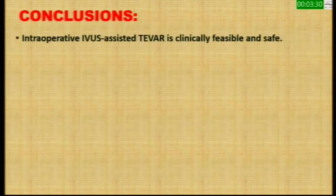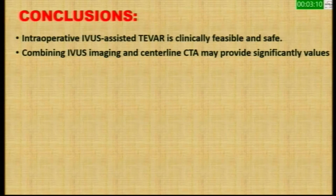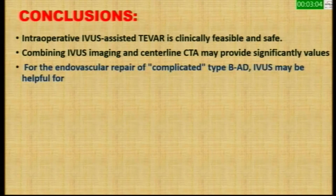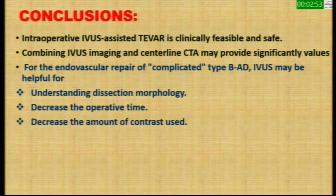In conclusion, intraoperative IVUS-assisted TEVAR is a clinically viable technique. Combining IVUS with pre-operative CTA provides significant value: confirming wire position, confirming the proximal landing zone health, and identifying intramural hematoma or diseased segments. IVUS can help assess the left subclavian artery. In vascular repair of complicated type B dissection, IVUS may help understand the dissection morphology, decrease operative time, and reduce contrast usage. IVUS can change the pre-operative plan.